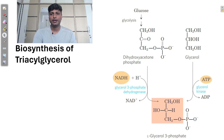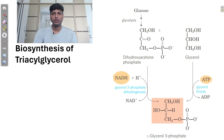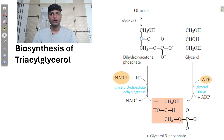Glycerol is basically formed from one of the intermediates of glycolysis. In glycolysis, glucose is broken down in a stepwise manner. One of the intermediates is DHAP — dihydroxyacetone phosphate. This DHAP can be converted into glycerol-3-phosphate by a simple reduction reaction.